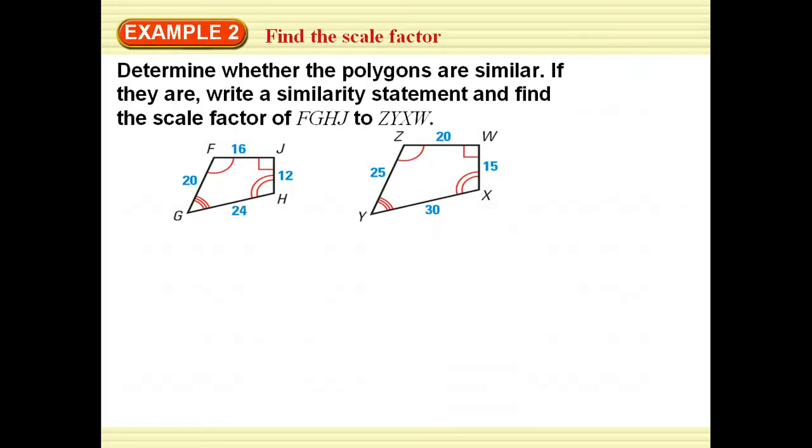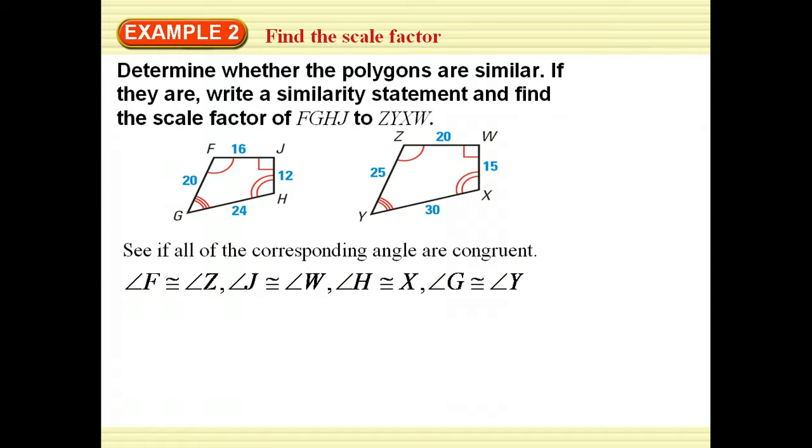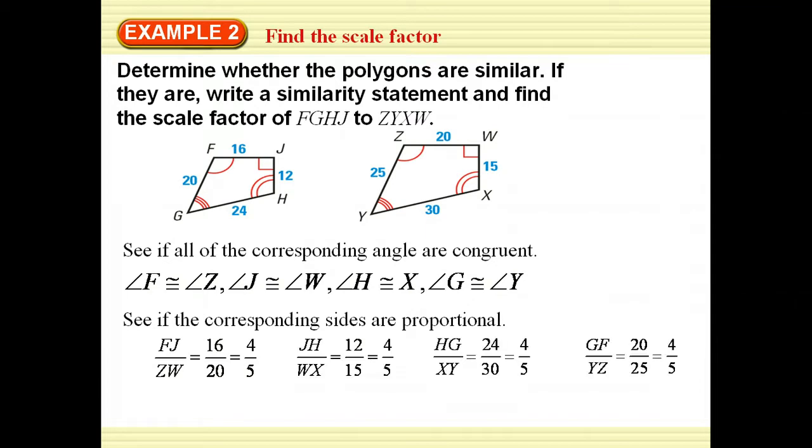We look at this, and it wants to know what our scale factor is. First determine if it's similar, and we determine if it's similar by seeing if the angles are all congruent, and they are marked to be congruent. Then we need to check all our sides and see if they're proportional. When I start doing my corresponding sides, I get that all four of them actually turn out to be four-fifths when I reduce it. So therefore we do know that they're similar. We can say that FGHJ is similar to ZYXW, and that the scale factor is four-fifths.